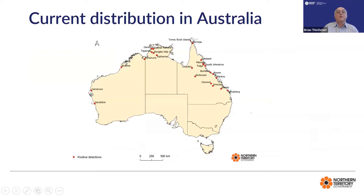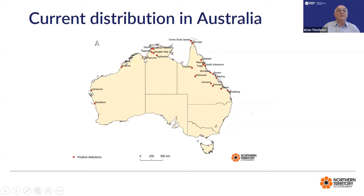This is the distribution in Australia. It actually arrived and was first trapped by the Northern Australian Quarantine Strategy with traps up in Torres Strait, and that was in January this year. Very soon, Queensland then started to put traps out further south, and it was picked up in traps further south and has now been trapped all the way down to Bundaberg.